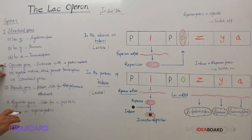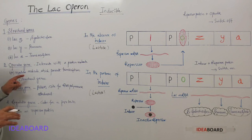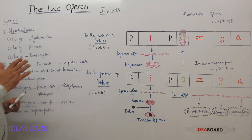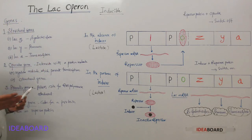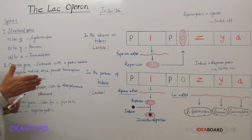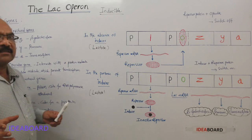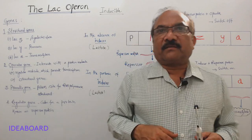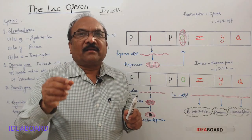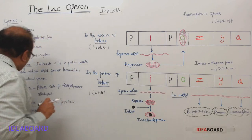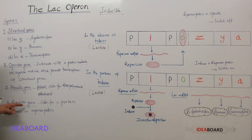Whenever the operator gene is associated with a protein molecule, it stops transcription of the structural genes. When it is not associated with that protein, it promotes transcription of the three structural genes. The promoter gene is where RNA polymerase attaches. The regulator gene codes for a protein called the repressor protein.